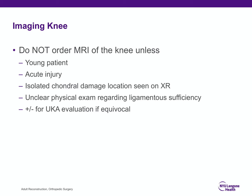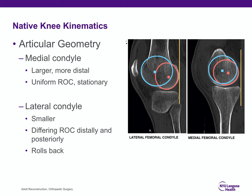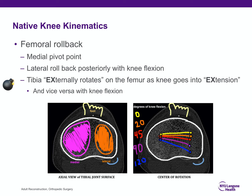Our native knee has differing articular geometry between the medial and lateral condyles. The medial condyle is larger with a uniform radius of curvature — it is a more stationary condyle through range of motion. The lateral condyle has differing radii of curvature between the distal and posterior condyle surfaces, allowing the lateral condyle to roll back during knee flexion. Femoral rollback involves a medial pivot point; as the knee flexes, the lateral condyle rotates posteriorly.